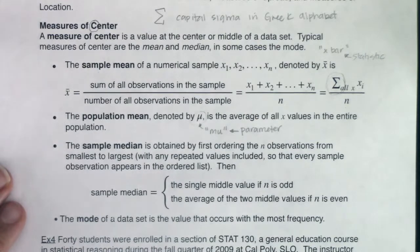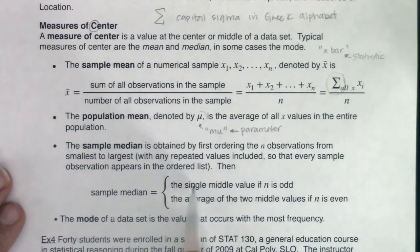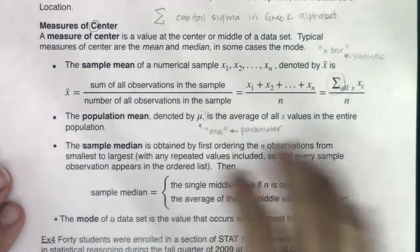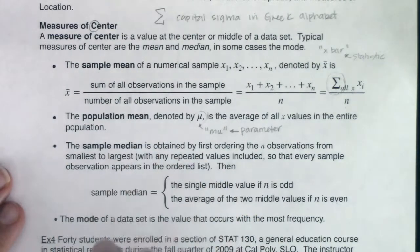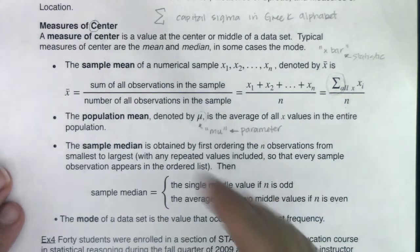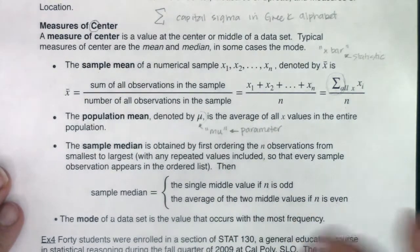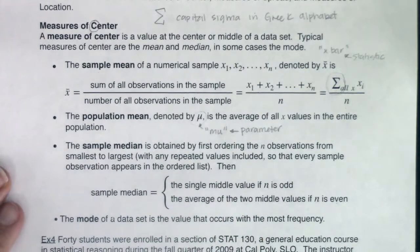The sample median: obtained by first ordering the n observations from smallest to largest, with any repeated values included. Then the sample median is either the single middle value if you have an odd number of observations, or the average of the two middle values if you have an even number of observations. If you want to find the median, order your data from low to high. If you have an odd number, there will be one middle number. If you have an even number, take the average of the two middle numbers.